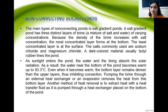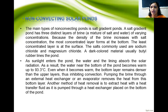Non-convective solar ponds have three layers: upper convective zone, middle non-convective zone, and lower convective zone. Salts are added in this type of pond. The main type of non-convective pond is the salt gradient pond. These ponds have distinct layers of brine — the lowest layer contains the maximum brine, and the upper layer is fresh water. Salts commonly used are sodium chloride and magnesium chloride, which settle in the lower convective zone. Dark-colored material is also used to absorb maximum solar energy.